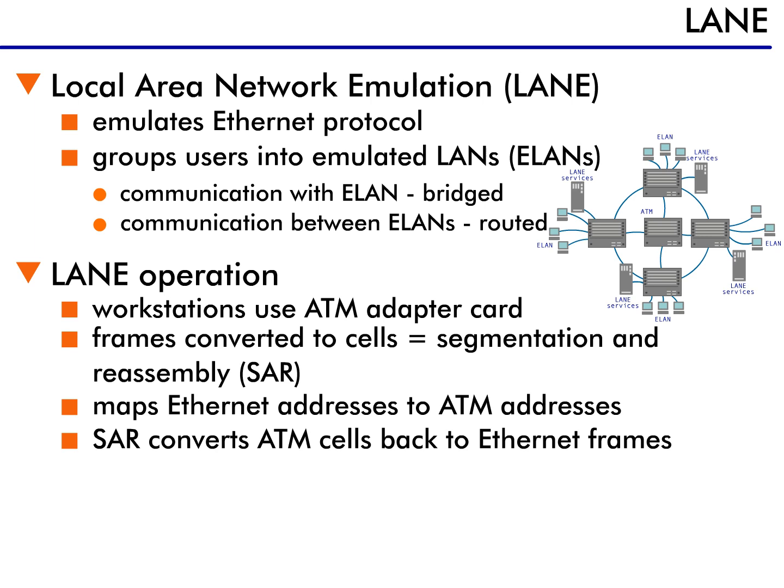To recap: LANE converts the packet to an Ethernet frame first, then uses the SAR function to create ATM cells. LANE then converts the Ethernet destination address to an ATM address and forwards the packet across the network. At the other end, the reverse happens — cells are converted back to frames and sent on to their final destination.